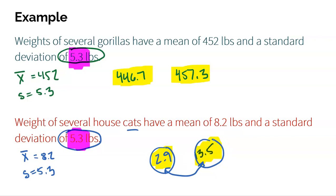My point is: first, understand that standard deviation is how far most data is from the mean, but also understand that you need context to judge whether that's a big or small spread — gorillas versus cats — the same number can mean very different things.